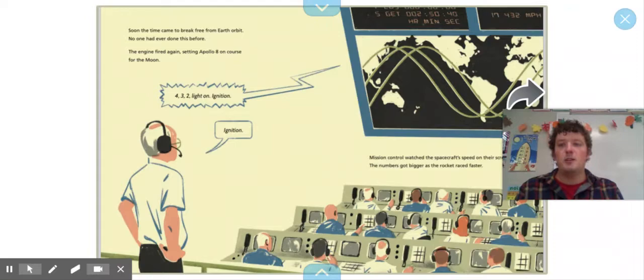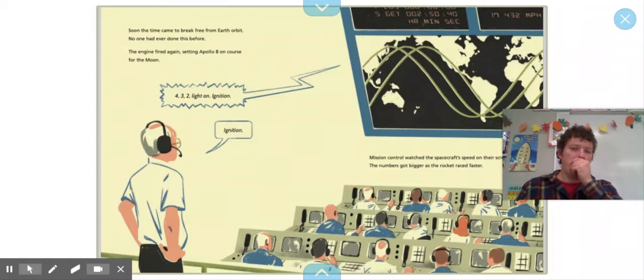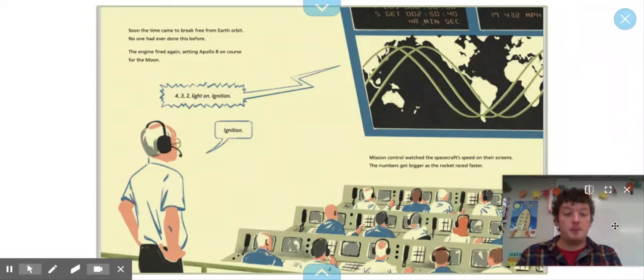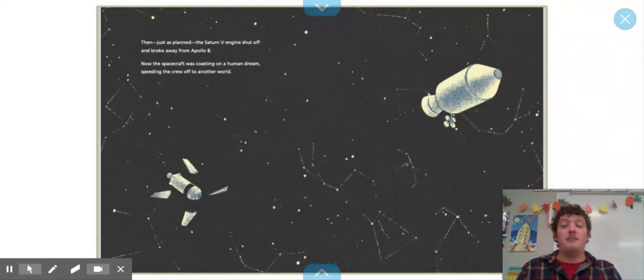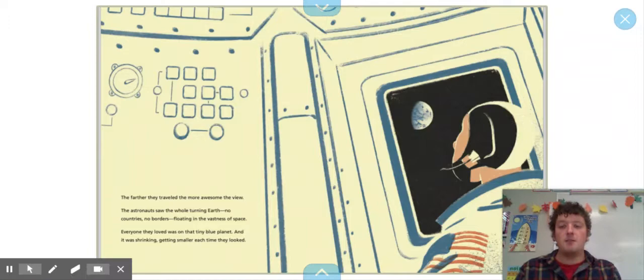Far above the crystal blue. Soon the time came to break free from Earth orbit. No one had ever done this before. The engines fired again, setting Apollo 8 on course for the moon. Four, three, two, light on. Ignition. Mission control watched the spacecraft speed on their screens. The numbers got bigger as the rocket raced faster.